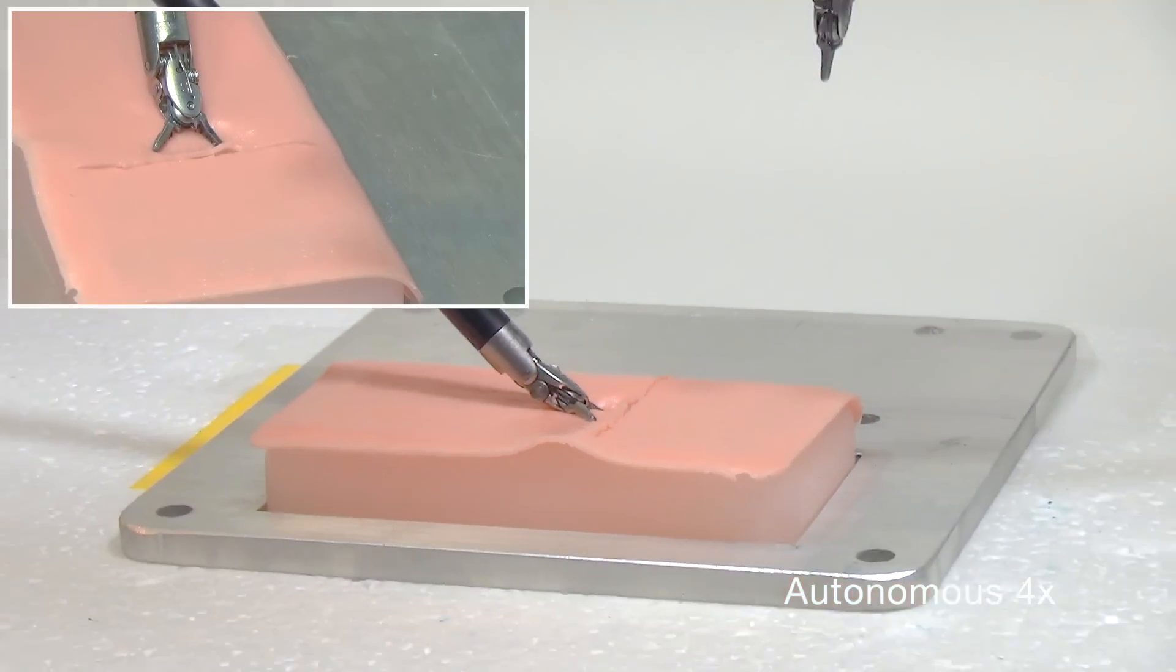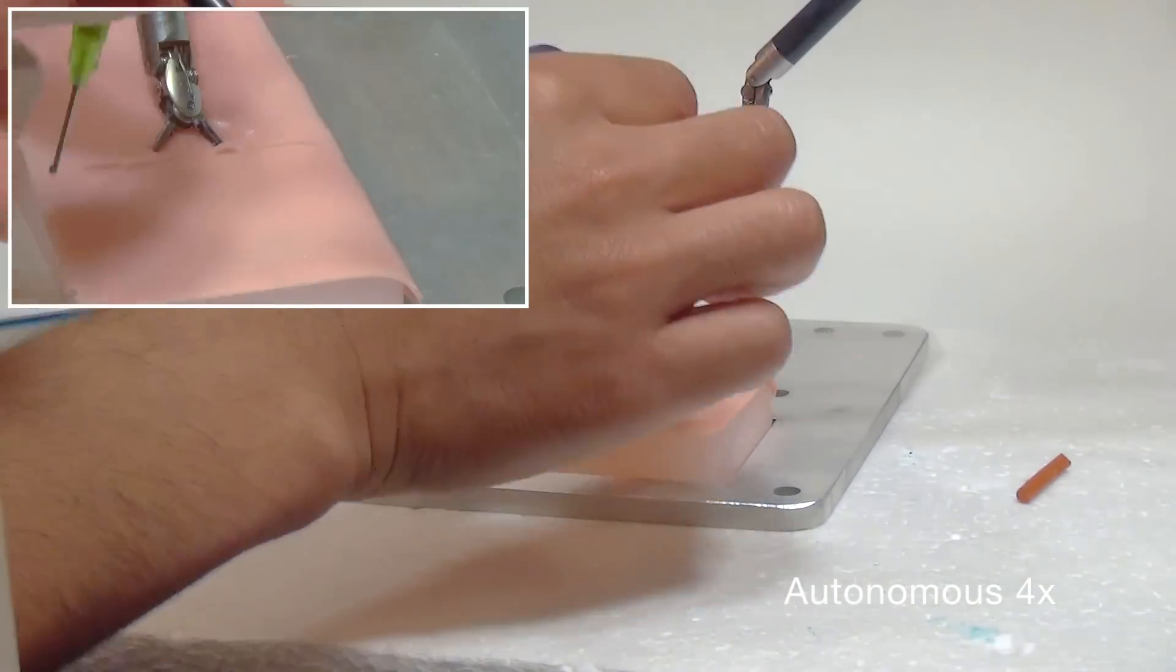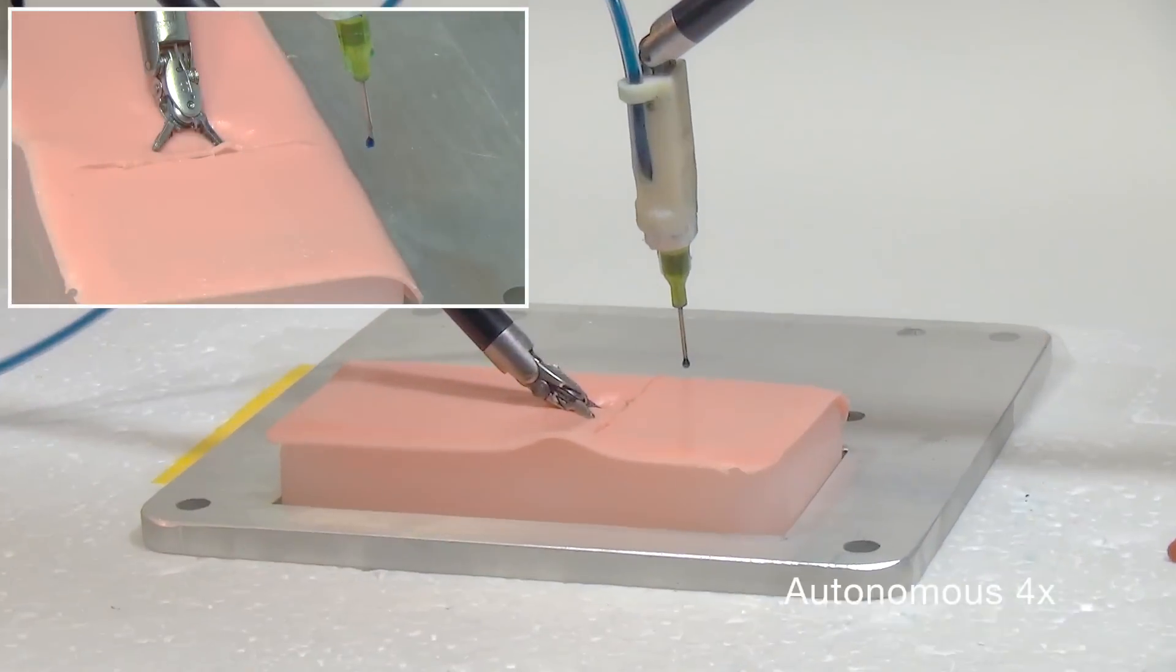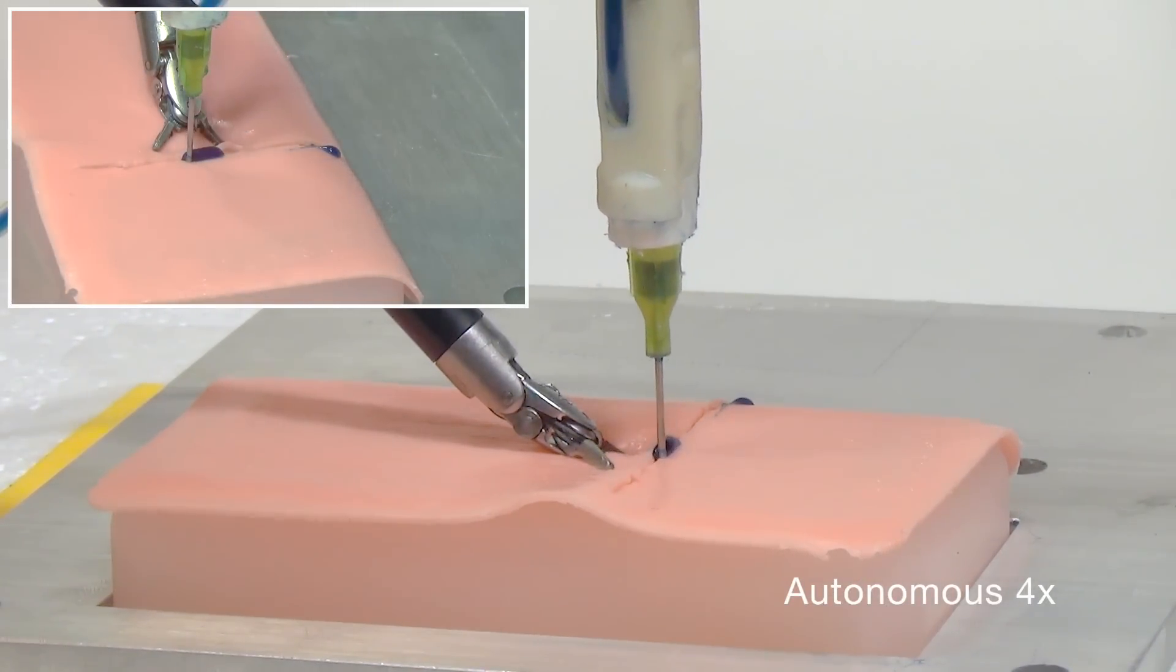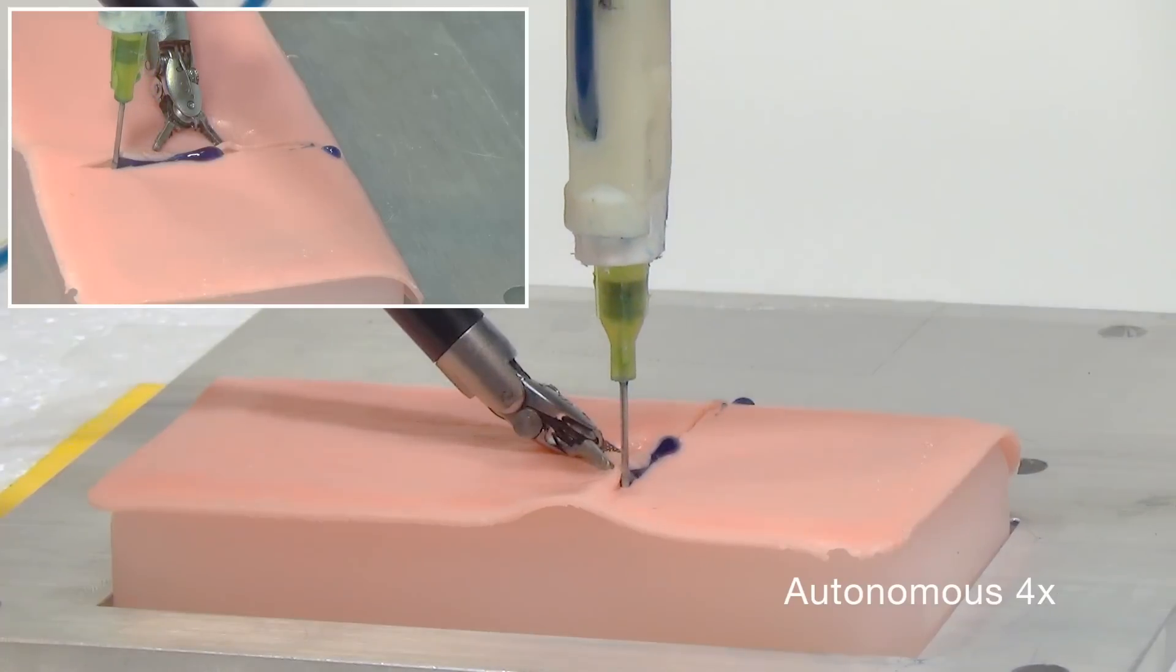The final step is the closure of the incision wound using surgical adhesive. One arm stabilizes the incision, while the other uses an automated injector we designed and implemented to apply the adhesive at a constant rate.